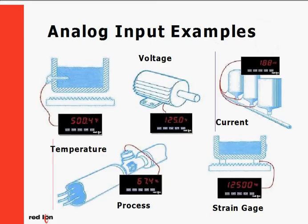An analog signal is based on level, whereas a digital signal is based on frequency or pulses. Some examples of analog signals are temperature, voltage, current, strain gauge, and process signals, such as a 4 to 20 milliamp or 0 to 10 volt signal.